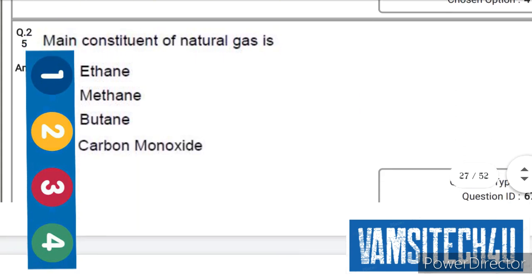Next question: The main component of natural gas is... the right option is second one, that is methane.